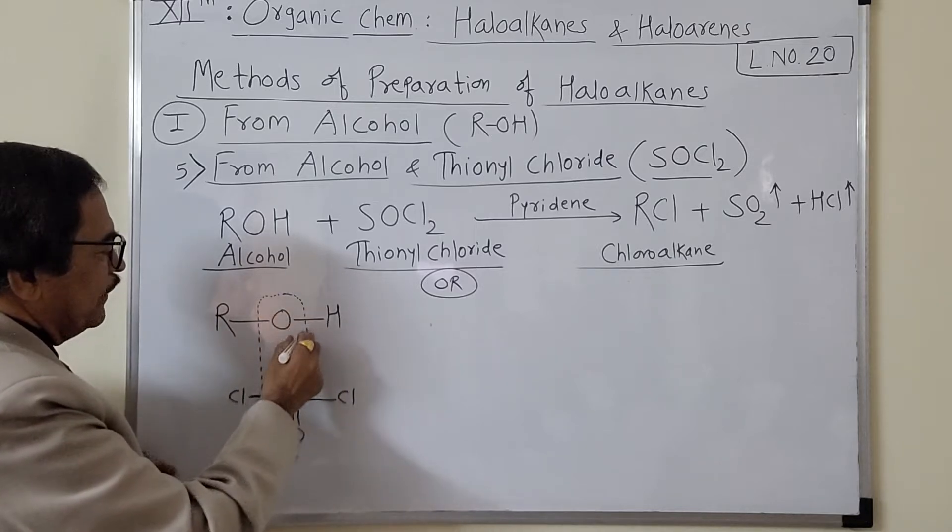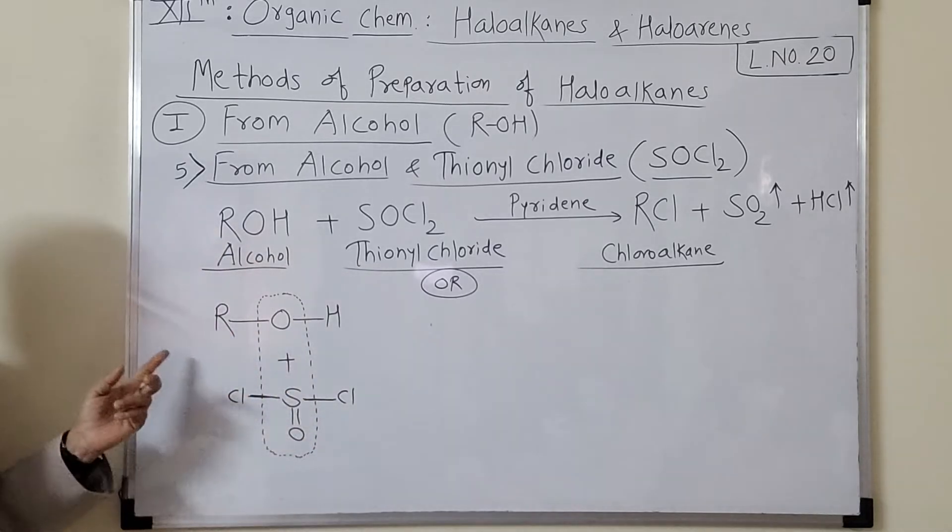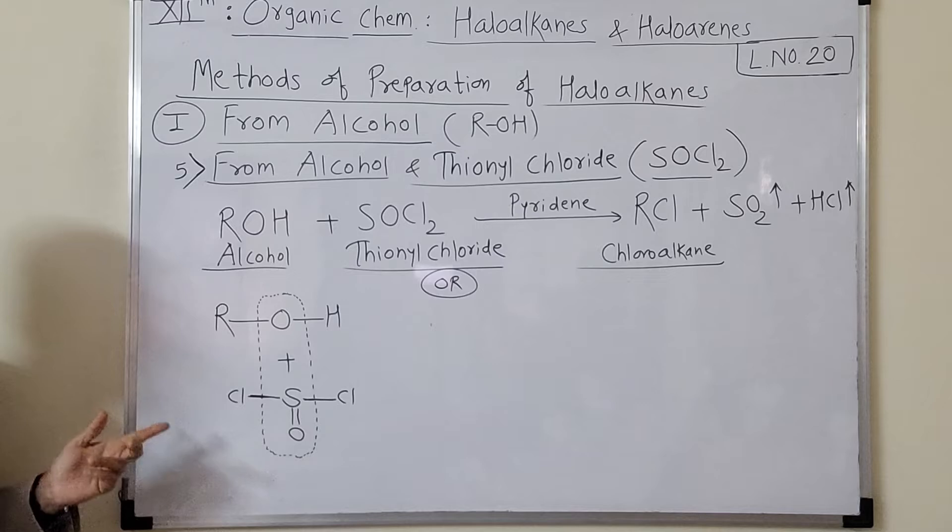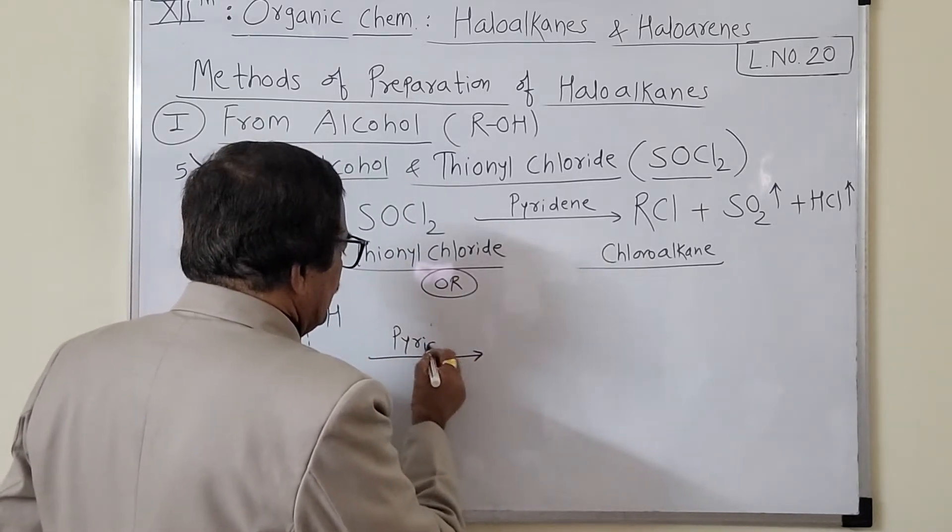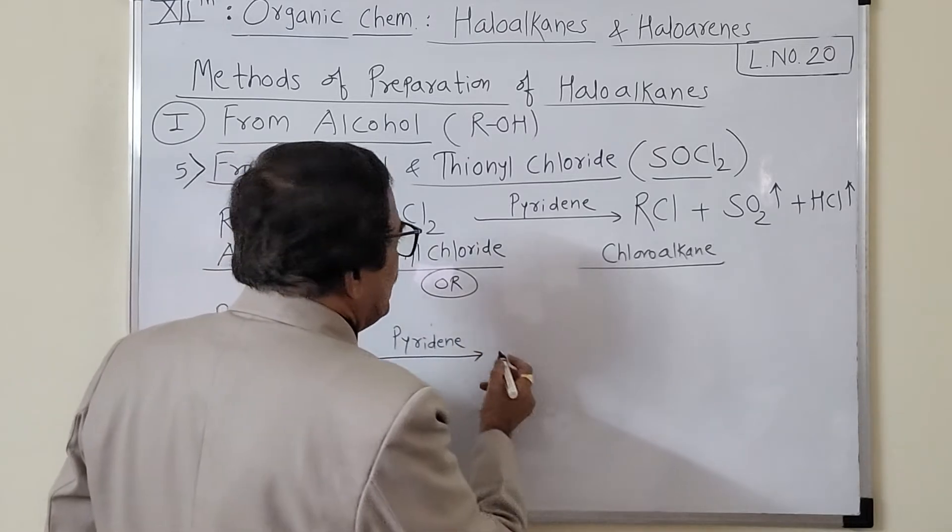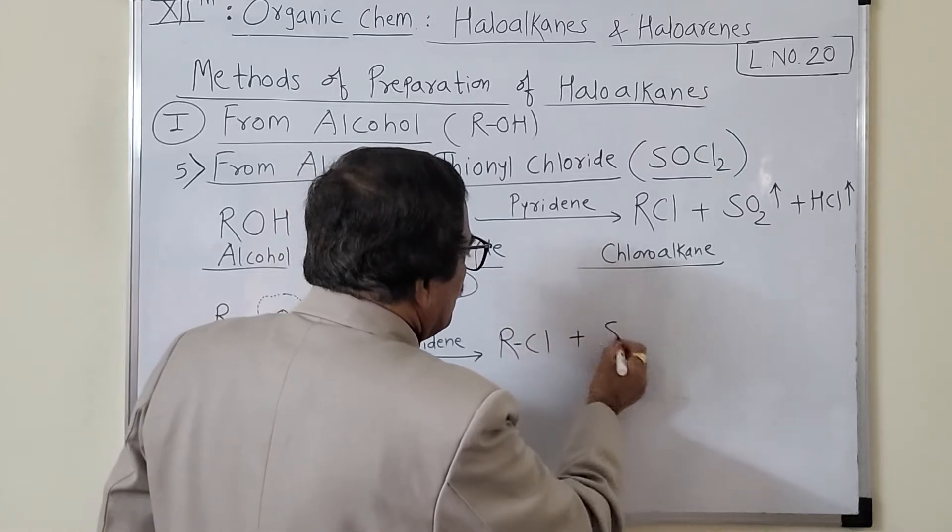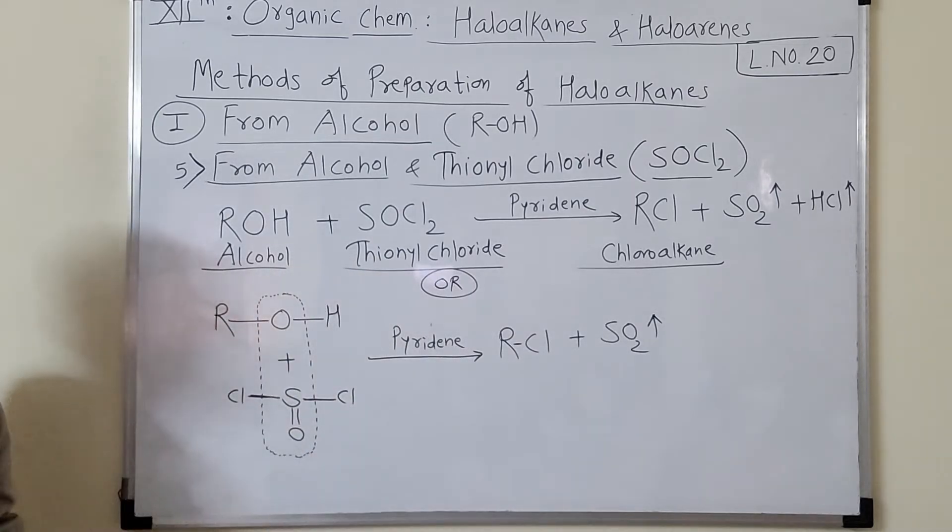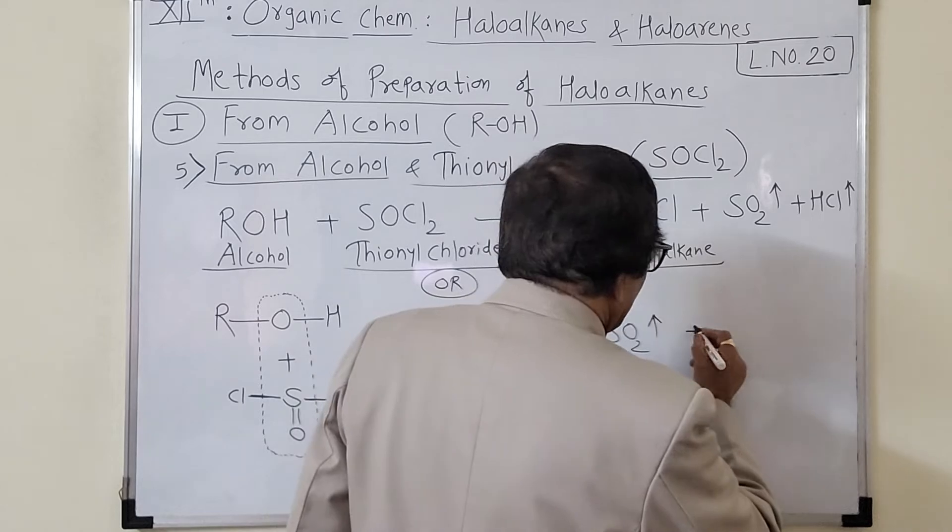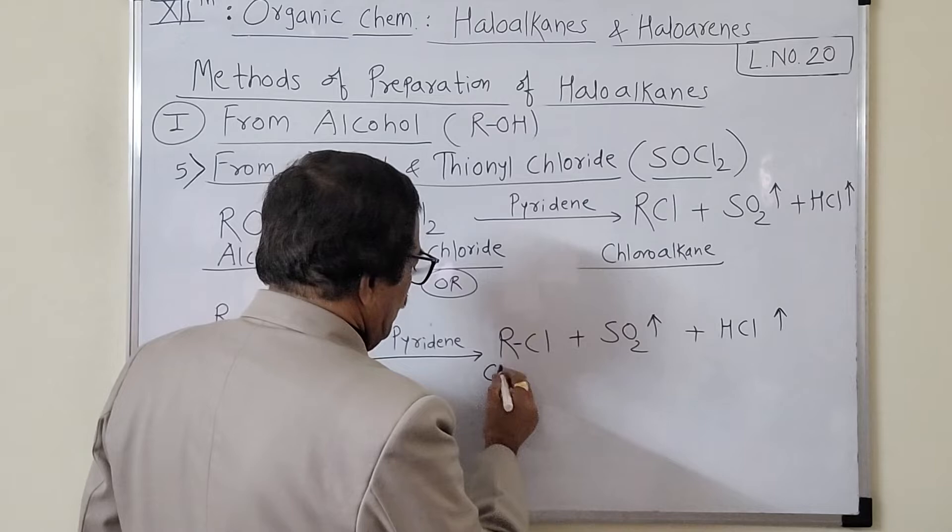And now when the bonds are broken like this, do bond as a break ho jaate hain. Humko kya milta hai? OH bond is broken, OR bond is broken, SCl, SCl bond is broken. Jo saamne waale hain unko ek saath jodo and you will get the same products. You will get RCl plus SO2 kaisa mil gaya dekho how SO2 is obtained, plus HCl. And this is chloroalkane.